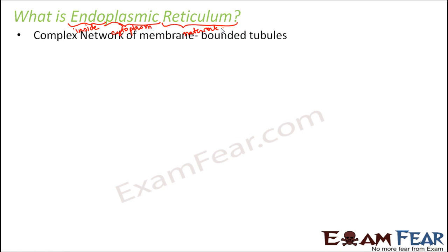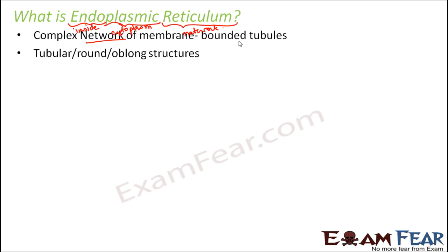It is a complex network of membrane tubules which are present inside the cytoplasm. So you have some tube-like structures which are surrounded by membranes. These are tubular, round, or oblong structures — the shape is not very specific. They are mostly tubular, bound by a membrane, and do not exist singly. A network of such tubule-like structures exist together, and this entire network is called endoplasmic reticulum.